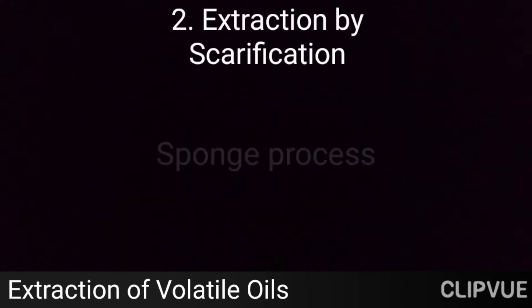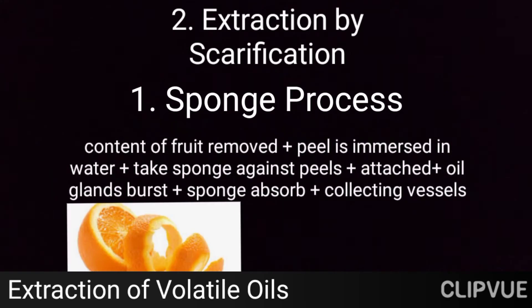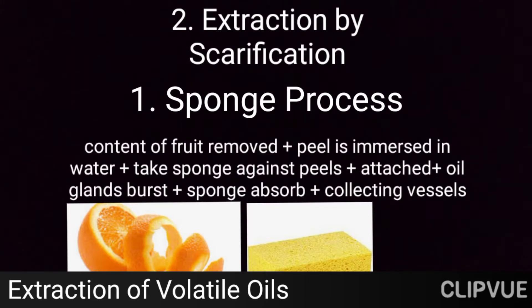The second method is extraction by scarification. There are two sub-methods: the sponge process and the ecuelle process. In the sponge process, the contents of the fruit are removed, and the peel is immersed in water. Then a sponge is held against the peel — the oil glands are brushed and the oil is absorbed into the sponge. The sponge is then pressed into collecting vessels to collect the oil.